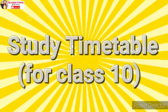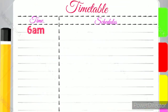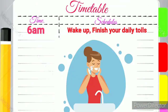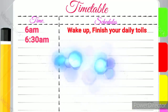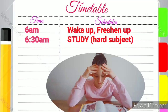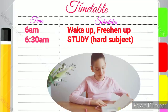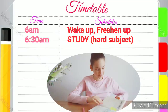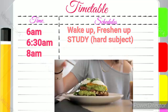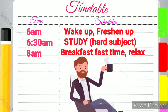Now let us take an idea of a study timetable. 6am: Get out of bed and finish your daily tasks. 6:30am to 8:00am: First start with your difficult subject — morning is the best effective time to study and learn new things. 8am to 9am: Have a healthy breakfast and relax for some time.